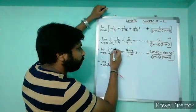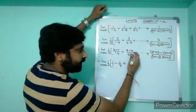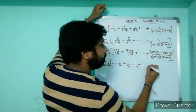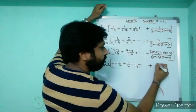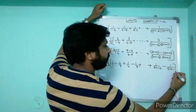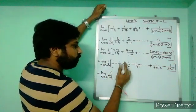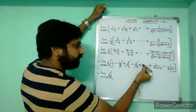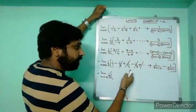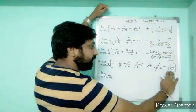By splitting each fraction: (4−1)/(1×4) = 1/1 − 1/4; (7−4)/(4×7) = 1/4 − 1/7; and so on. The positive and negative terms cancel telescopically — the −1/4 cancels with +1/4, −1/7 cancels with the next, and so on. Every negative term cancels with the following positive term.